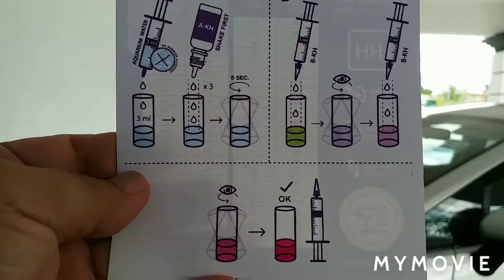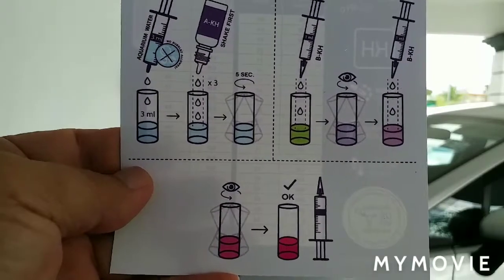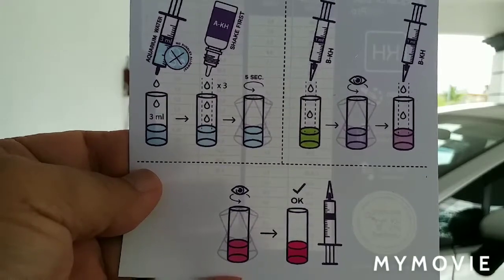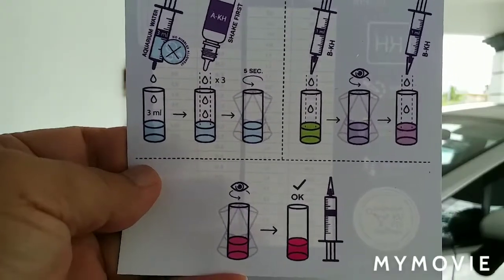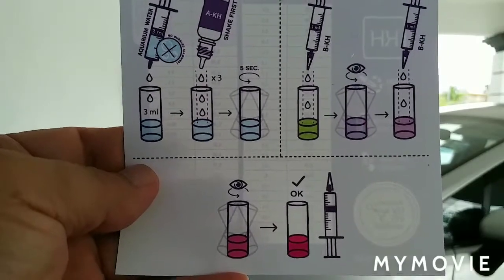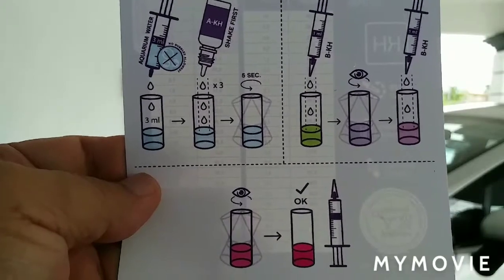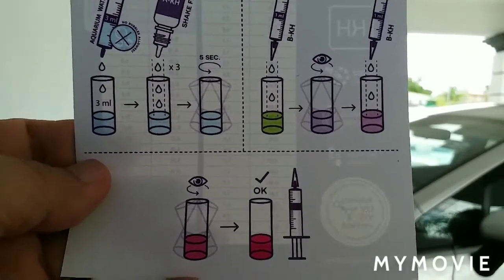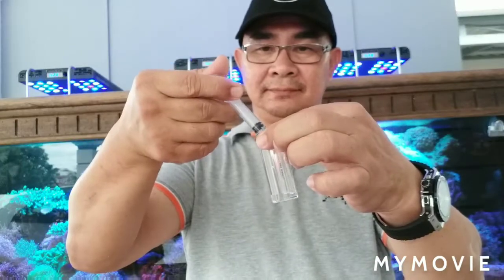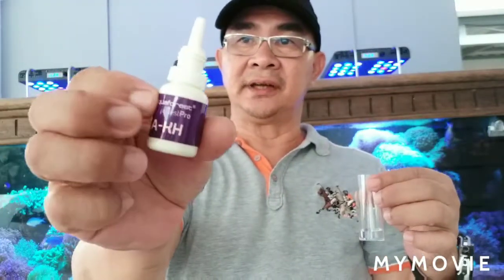Then we put 3 drops of the AKH reagent into the test tube. I already took the water sample from my aquarium — that is the 3 ml — and I'll put it into this test tube. Now for the AKH, we'll put three drops: one, two, three.